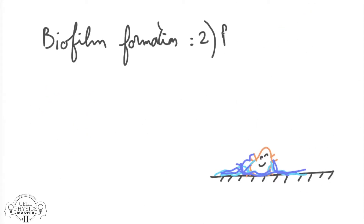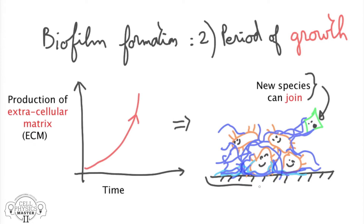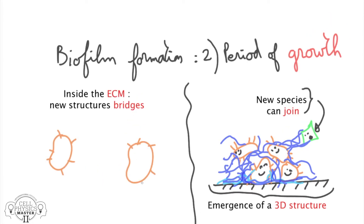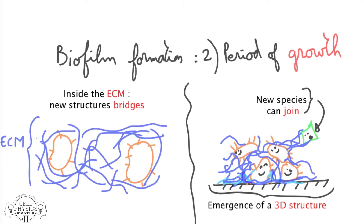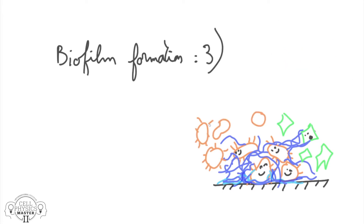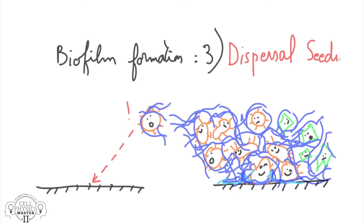Fixation is followed by a period of growth, and eventually the biofilm can achieve a multilayered 3-dimensional composition. More complex structures can appear within the matrix as bridges between the microorganisms, allowing them to exchange nutrients and information. Finally, clusters of cells can escape from a mature biofilm and settle on new surfaces. This is called dispersal seeding.